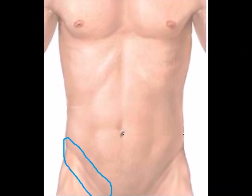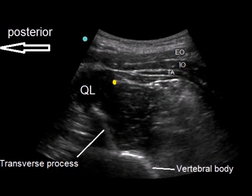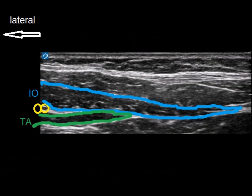The inguinal region is supplied by the subcostal, ilio-inguinal and ilio-hypogastric nerves. These nerves run anterior to the quadratus lumborum, then in the transversalis plane, then in TAP, between the internal oblique and the transversus abdominis.